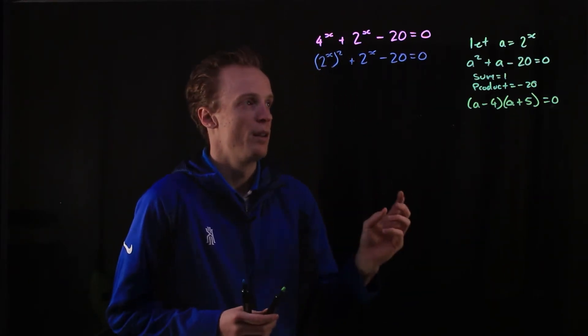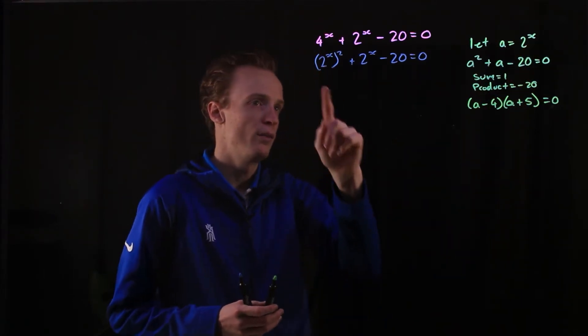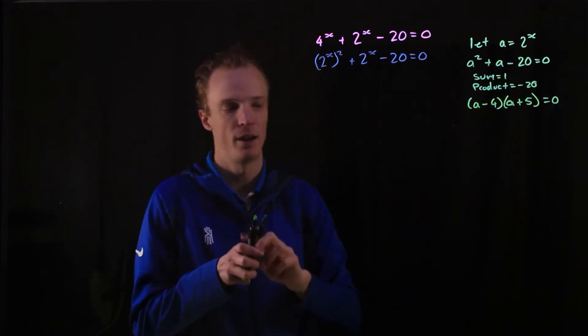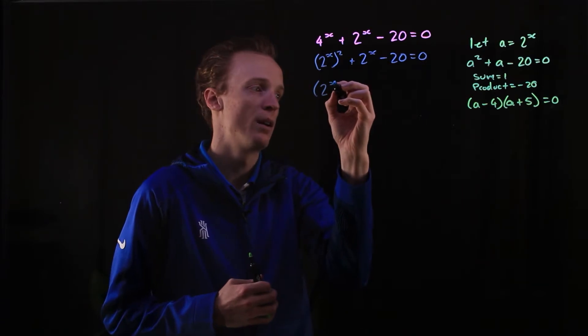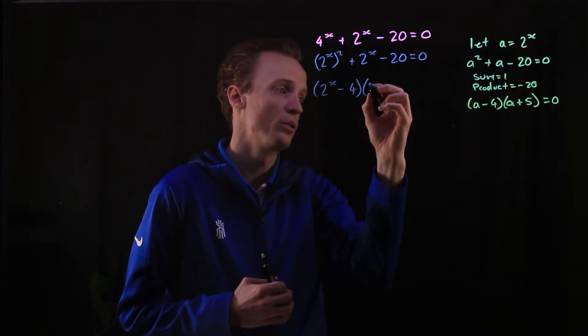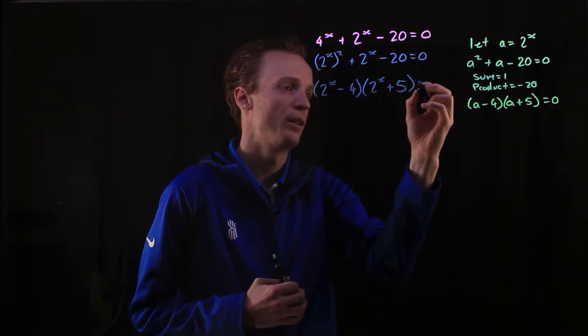But remember, our a is 2^x. So I can factorise this by replacing my a with (2^x - 4) and (2^x + 5). And that will still equal 0. So now I've factorised this here into two linear factors.